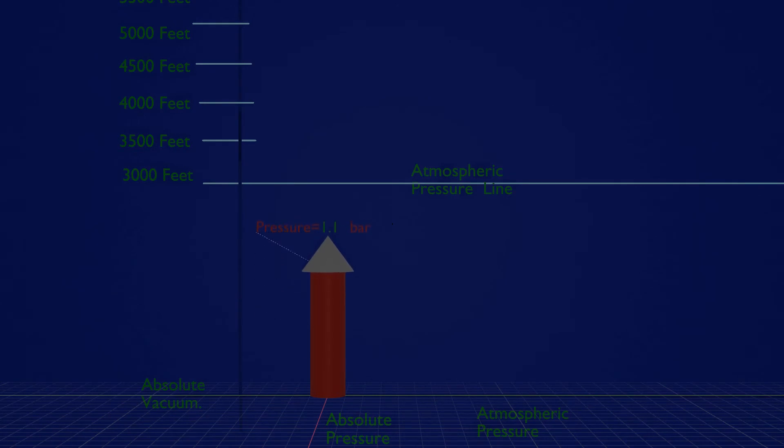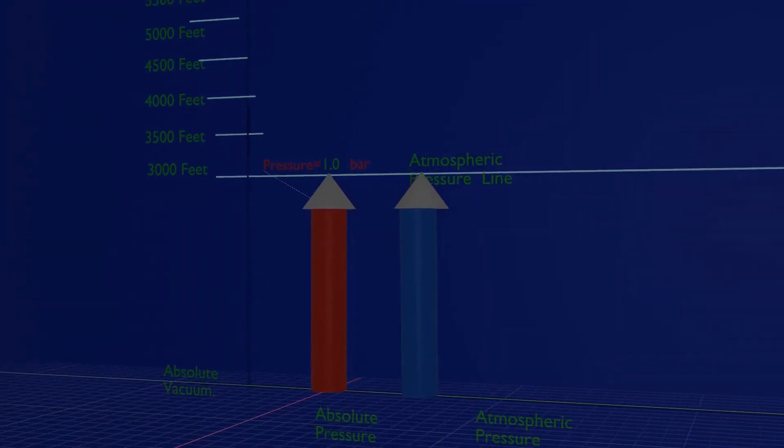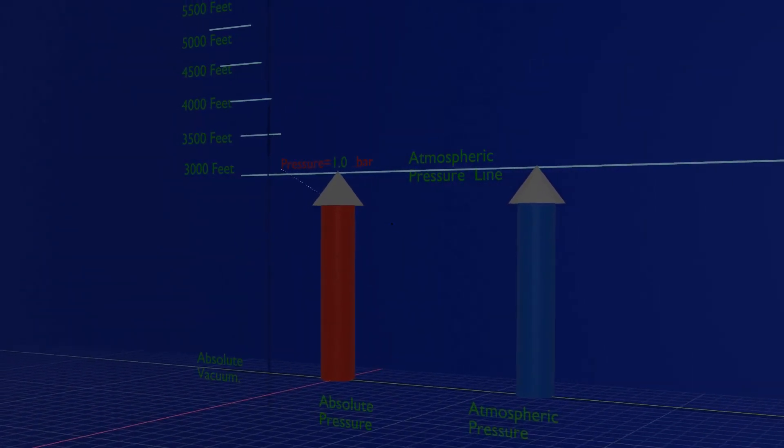So absolute pressure is just the total pressure or real pressure. It is equal to atmospheric pressure when gauge pressure is zero.